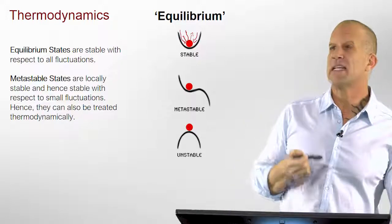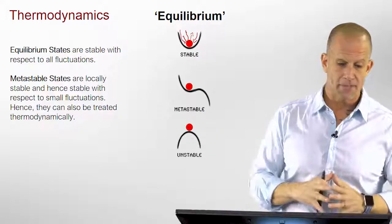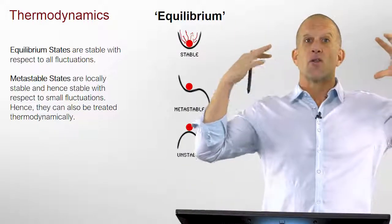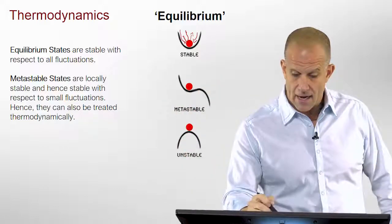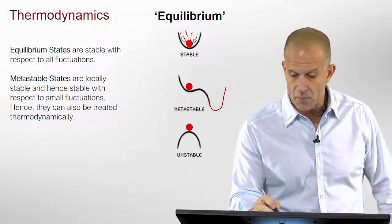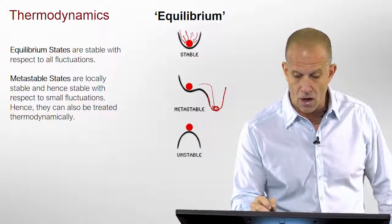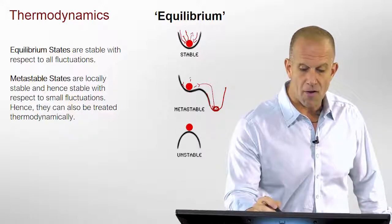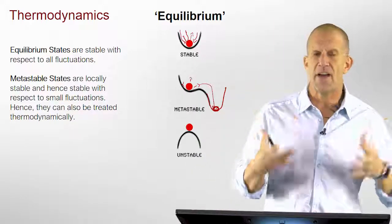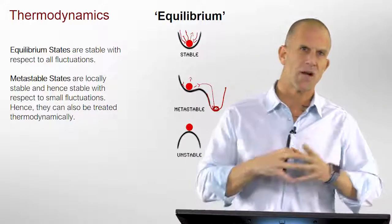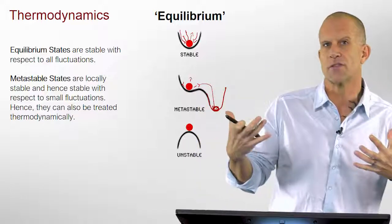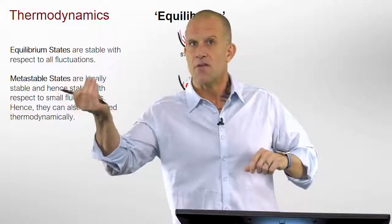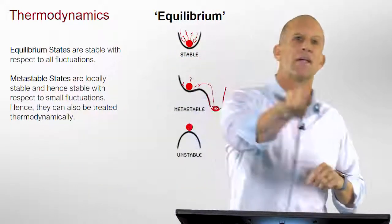This can also happen even in what's a metastable state, which is a state that is not globally stable. There might be a lower minimum where this thing could be at a lower energy. But locally, with respect to small fluctuations, it is stable. This is very common in biochemistry. Oftentimes, a lot of biological systems are not at their most stable thermodynamic state. They're in a metastable state.